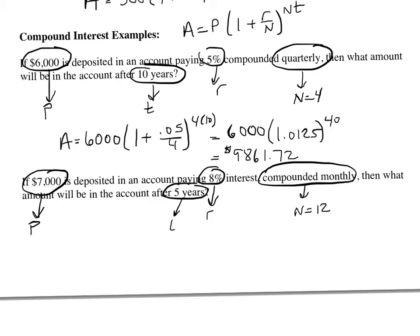So our amount will be 7,000 times (1 plus 0.08 over 12) to the 12 times 5 power. So 7,000 and 0.08 divided by 12 is 0.006 repeating.